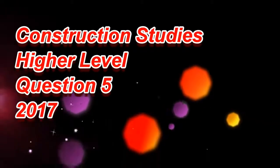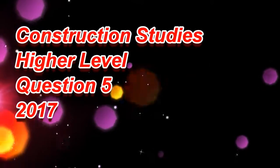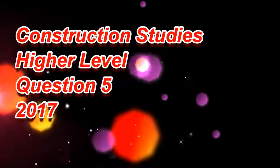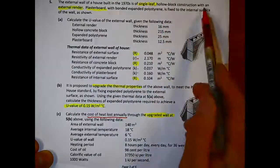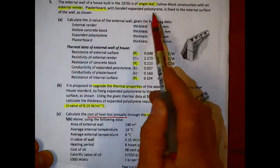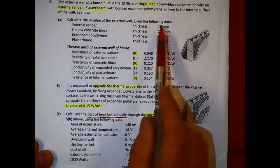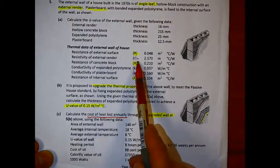In this video, I want to take a look at question 5 from the 2017 paper. It's the U-values question. To start off with, I'm going to take a quick look through the question. We see the single leaf wall: external render, plasterboard, just shown in the picture, and some of the details here with the sizes.